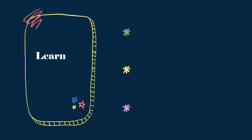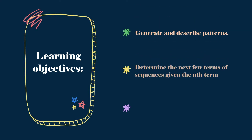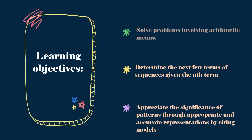So, learners, at the end of the lesson, you must be able to: generate and describe patterns; determine the next few terms of sequences given the nth term; appreciate the significance of patterns through appropriate and accurate representations by citing models; and solve problems involving arithmetic sequence.